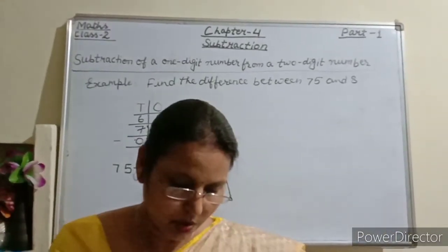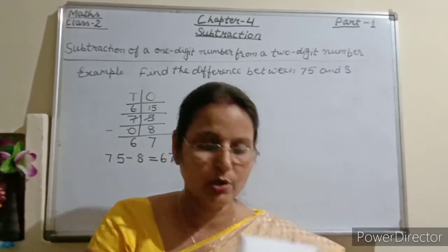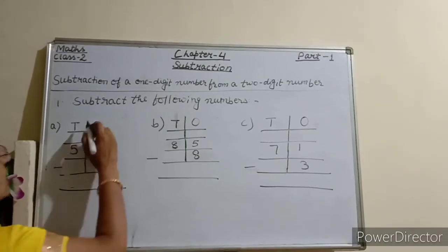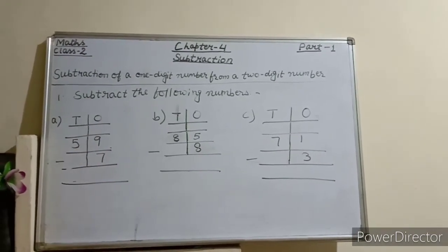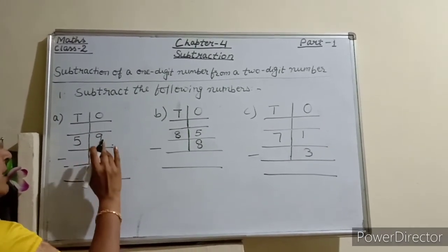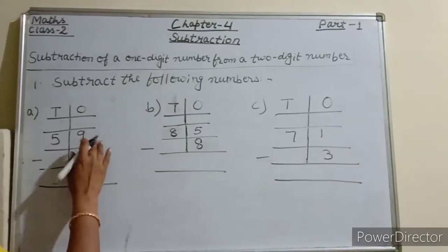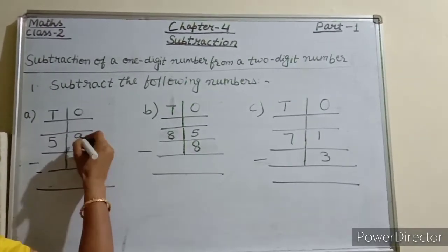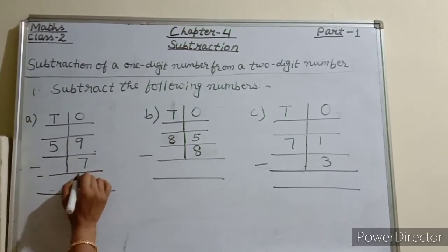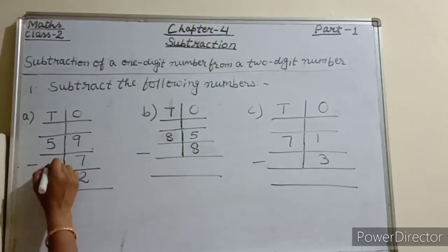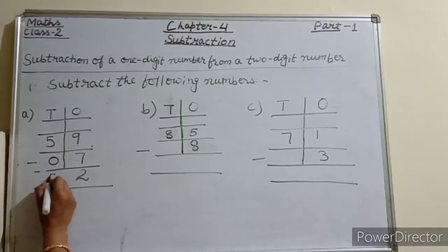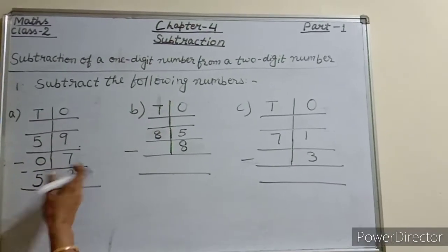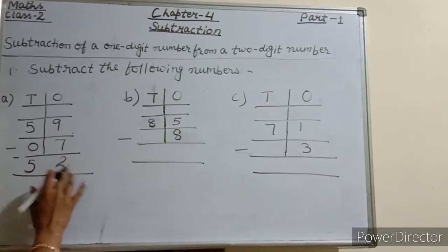Checkpoint 1: subtract the following numbers. First, 59 minus 7. At the ones place, the minuend 9 is greater than the subtrahend 7, so no regrouping is needed. 9 minus 7 equals 2, and 5 minus 0 equals 5. So 59 minus 7 equals 52.